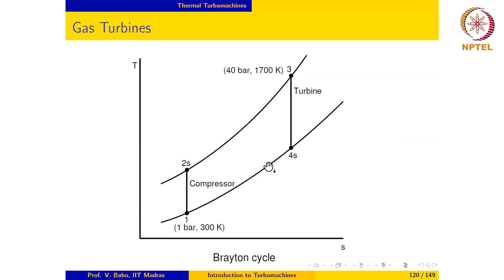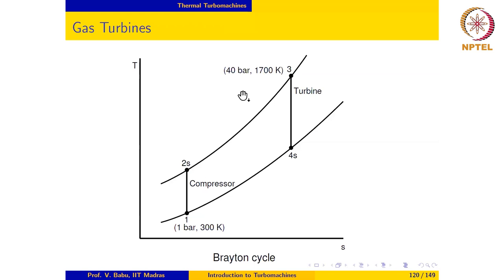Next we take a look at the axial compressor and axial turbine used in a gas turbine. Most modern gas turbine engines operate at pressures as high as 40 bar and temperatures as high as 1700 Kelvin, so these are the kinds of figures we would be working with.